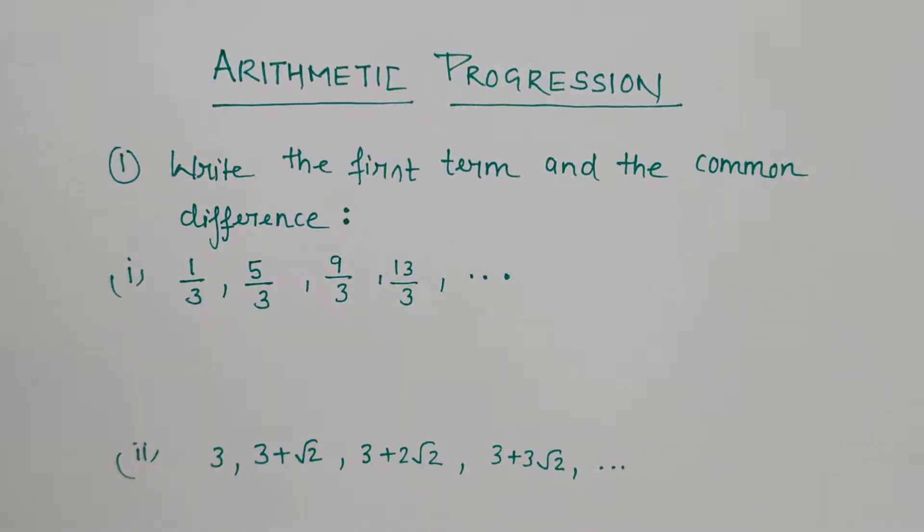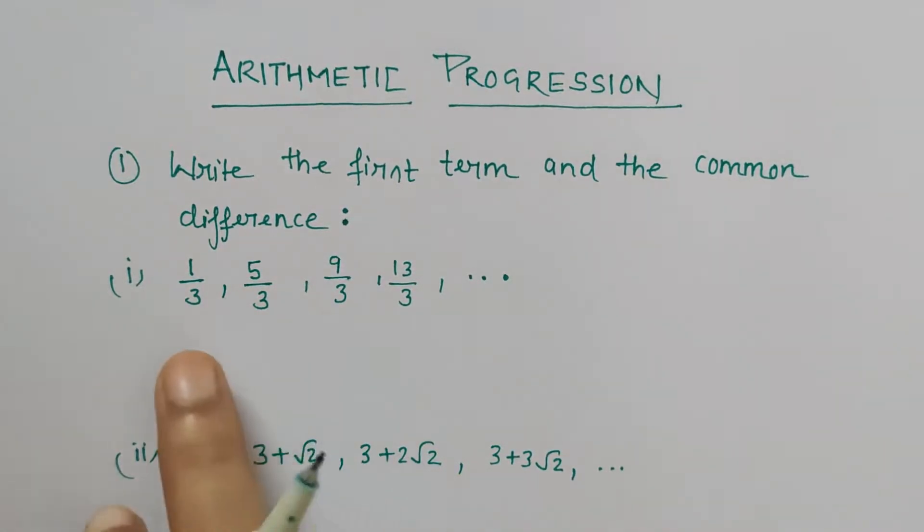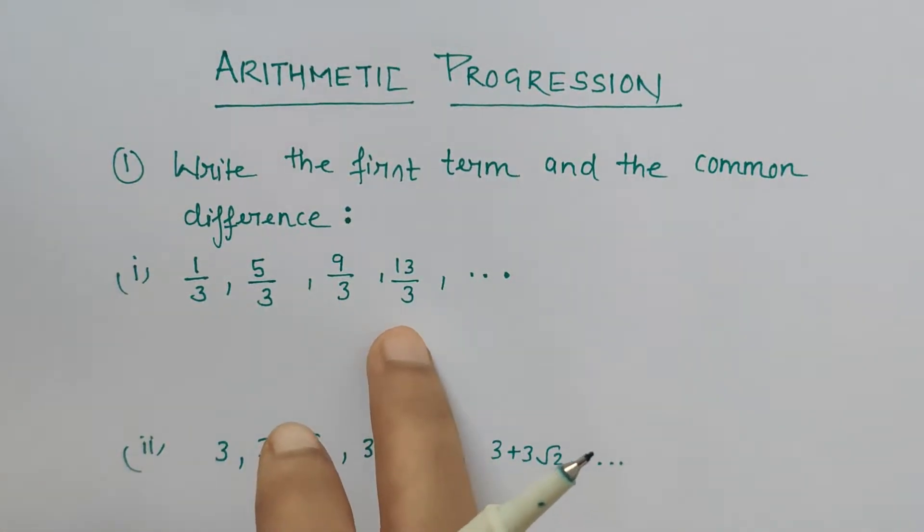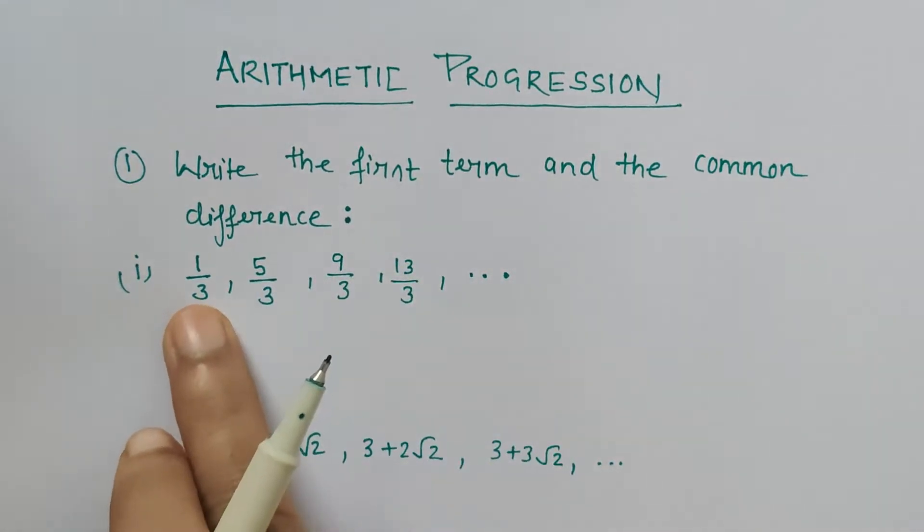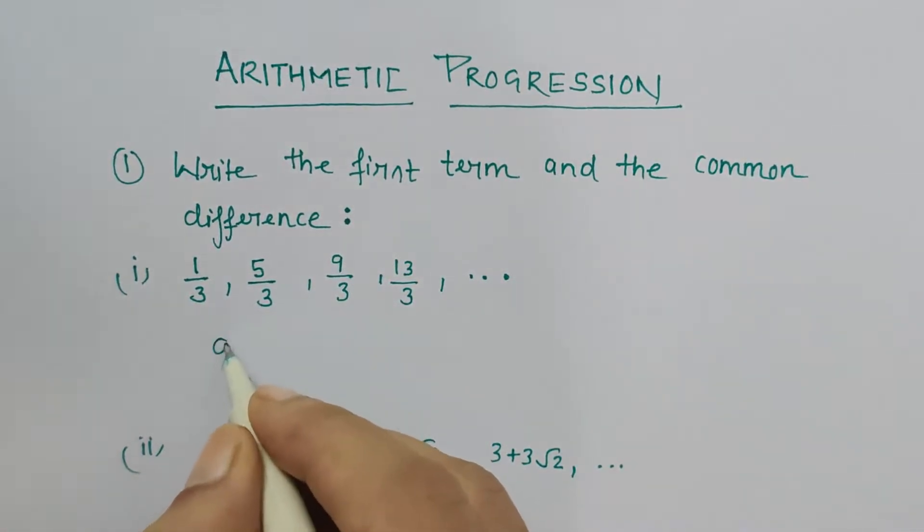Hello friends, I am with the arithmetic progression chapter. Here we have to find the first term and the common difference for the given arithmetic progression. The first term denotes the term which is first, so a here is the notation used for the first term.